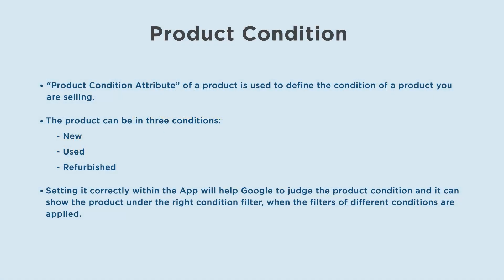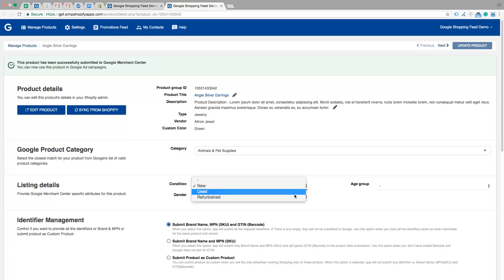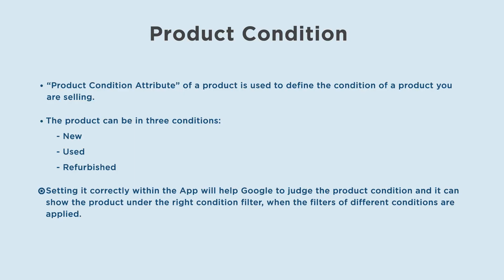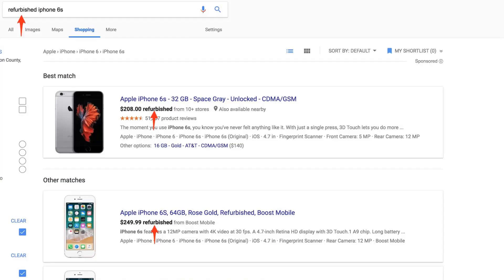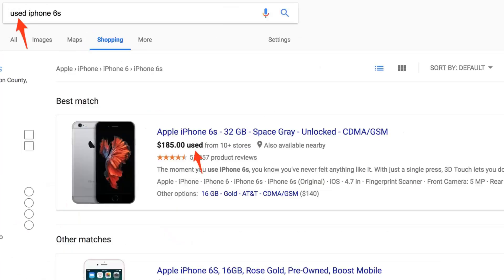Product condition attribute of a product is used to define the condition of a product you are selling. The product can be in three conditions: new, used, and refurbished. Setting it correctly within the app will help Google to judge the product condition and it can show the product under the right condition filter when the filters of different conditions are applied.